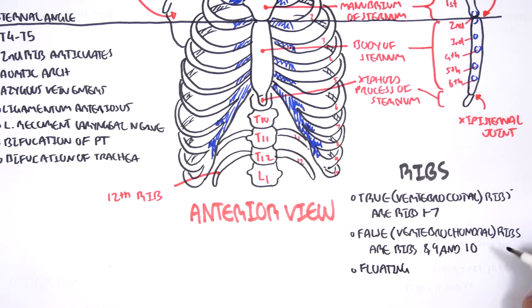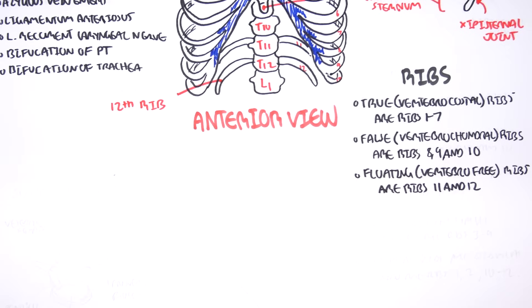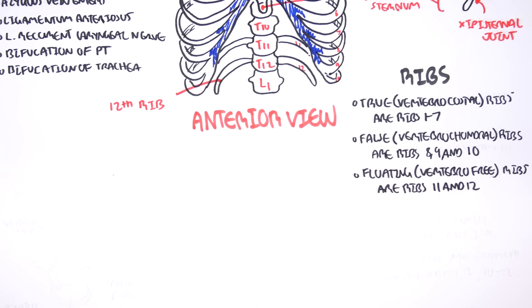Finally, you have floating ribs, or the vertebra-free ribs, which are ribs 11 and 12. These are the ribs that originate from the vertebra, but don't attach anywhere.